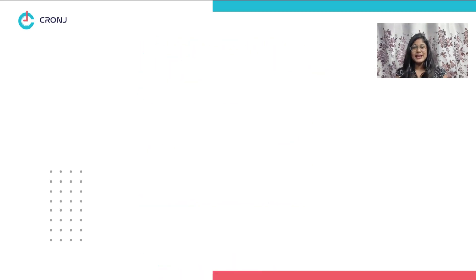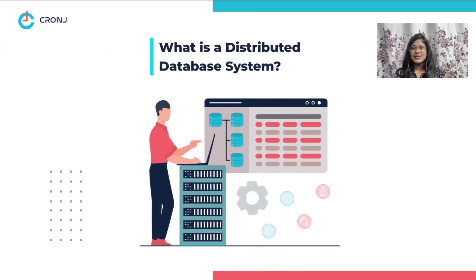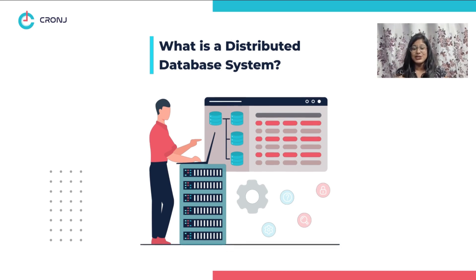But firstly, what is a distributed database system? When a database contains multiple files located in different sites, either on the same or different networks, it is known as a distributed database system. Its processing is distributed among different database nodes.